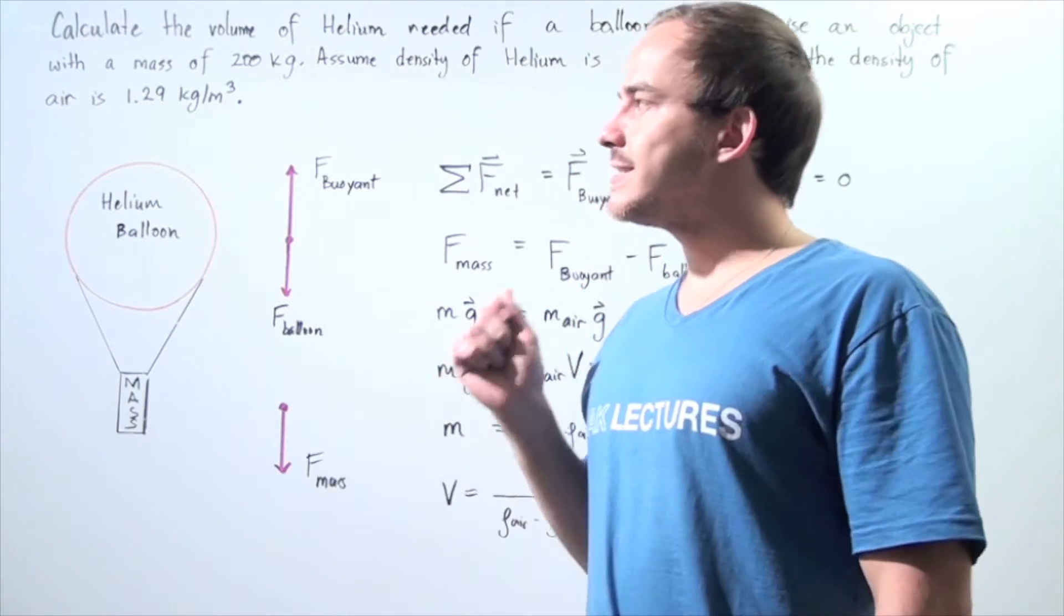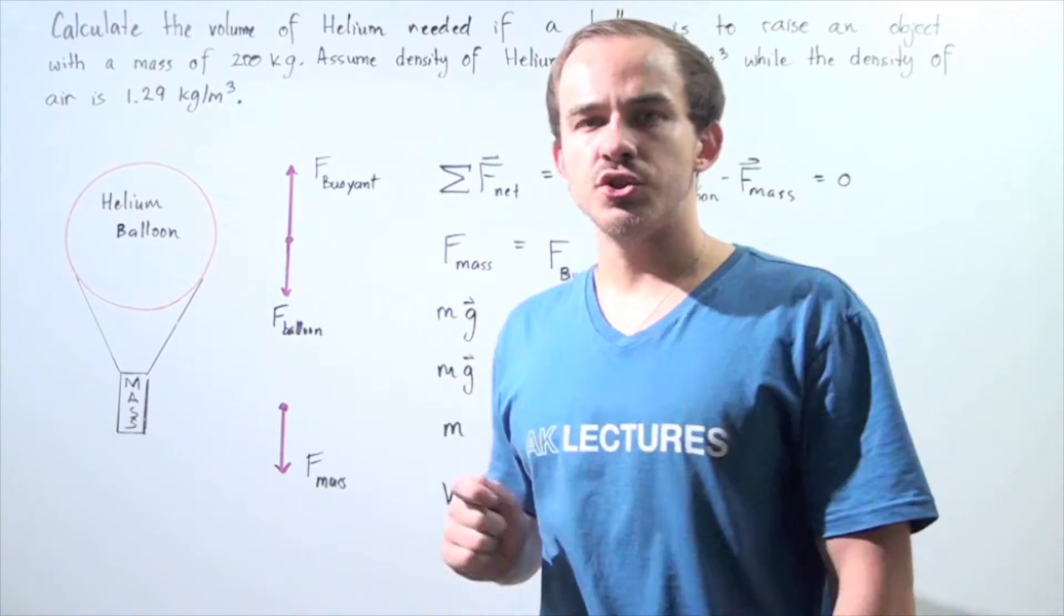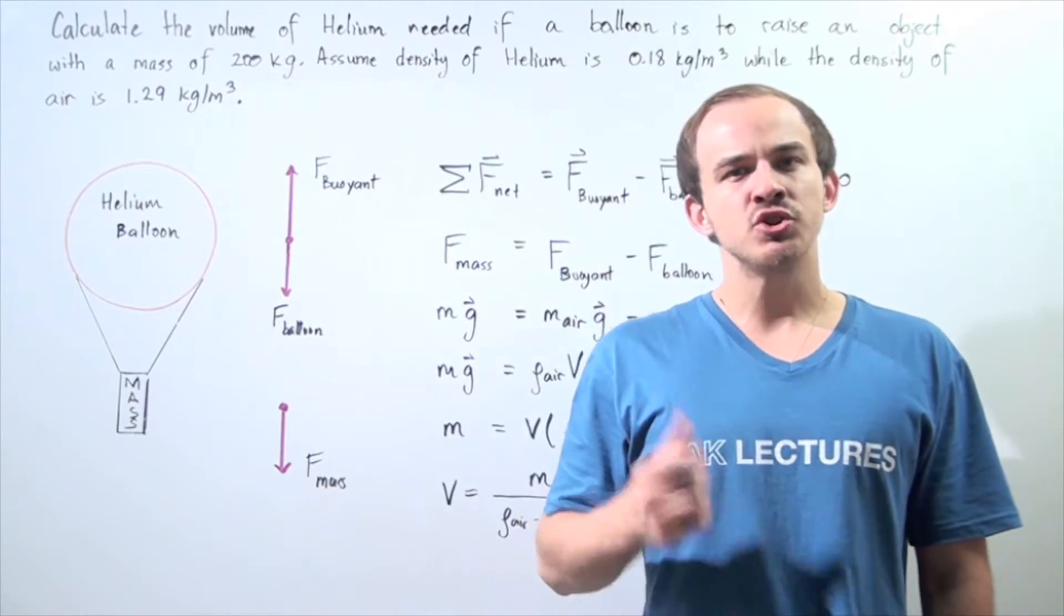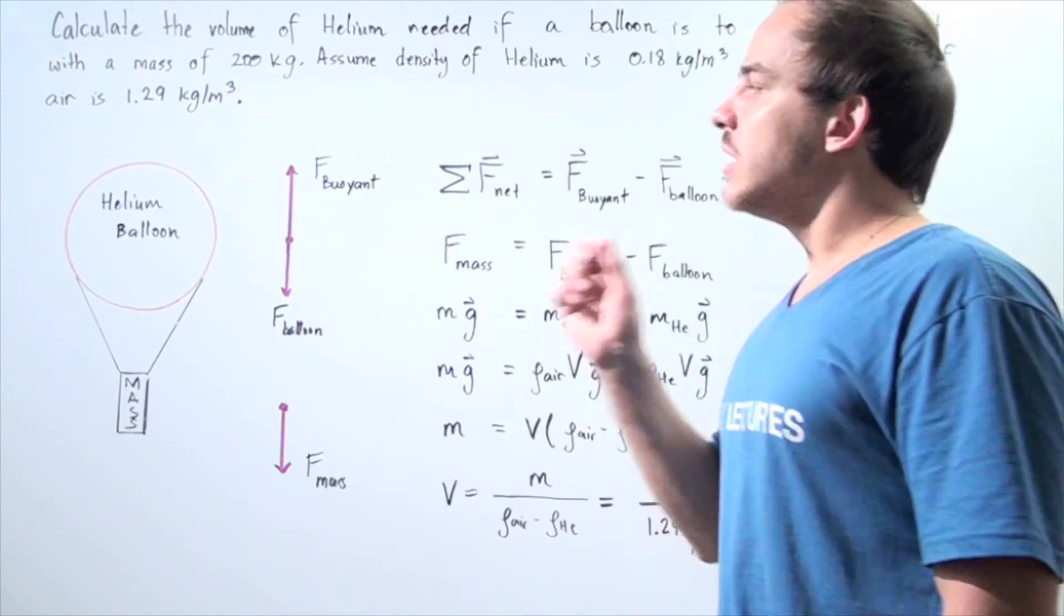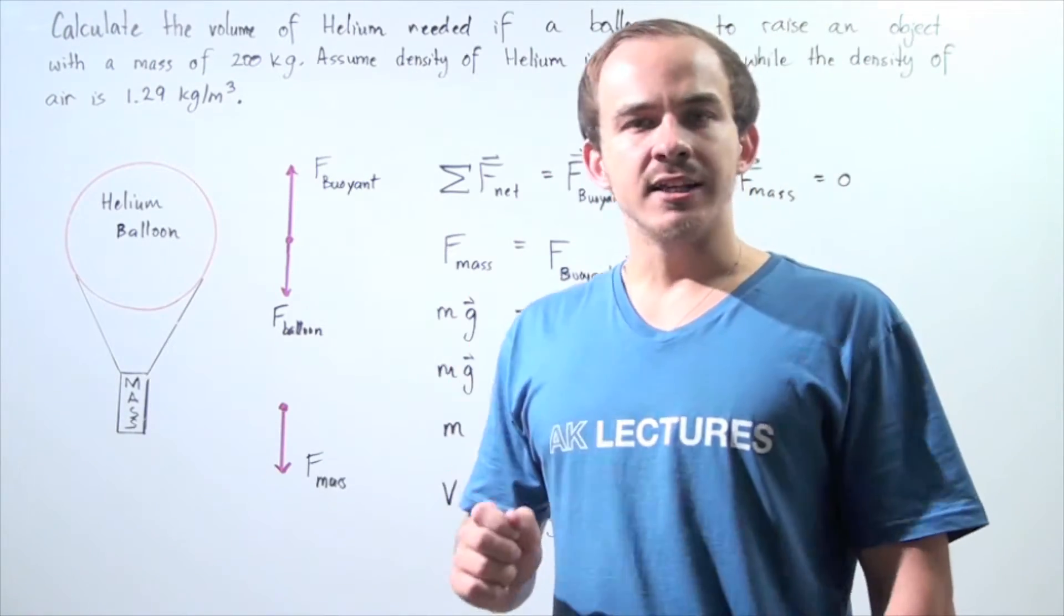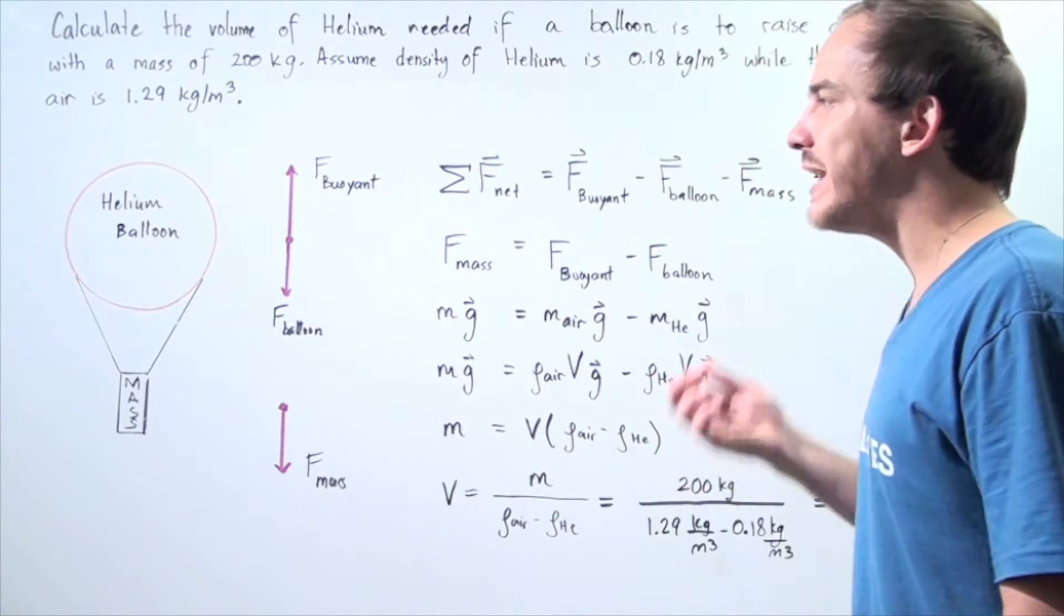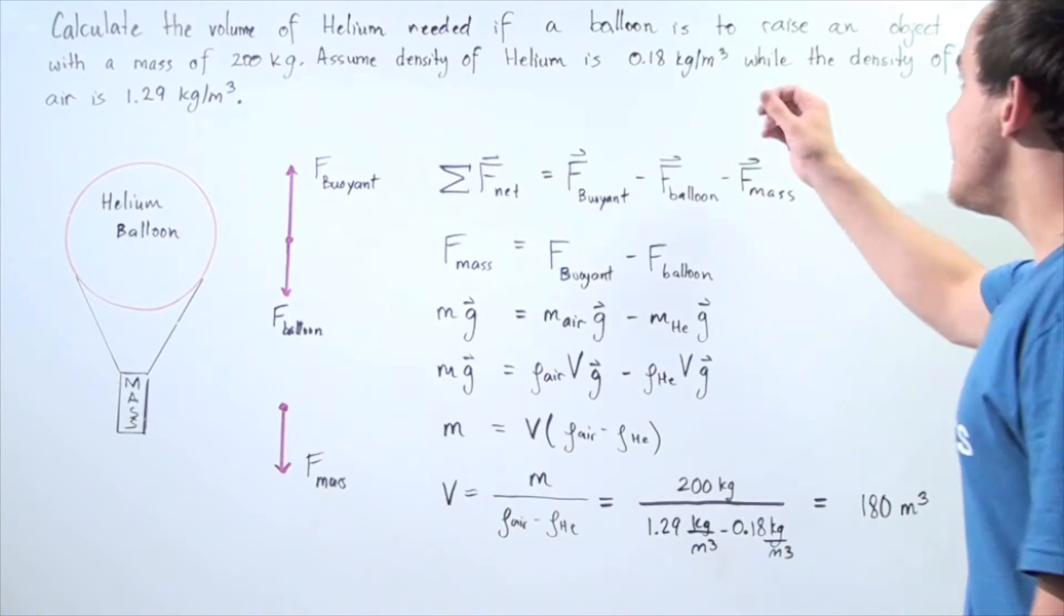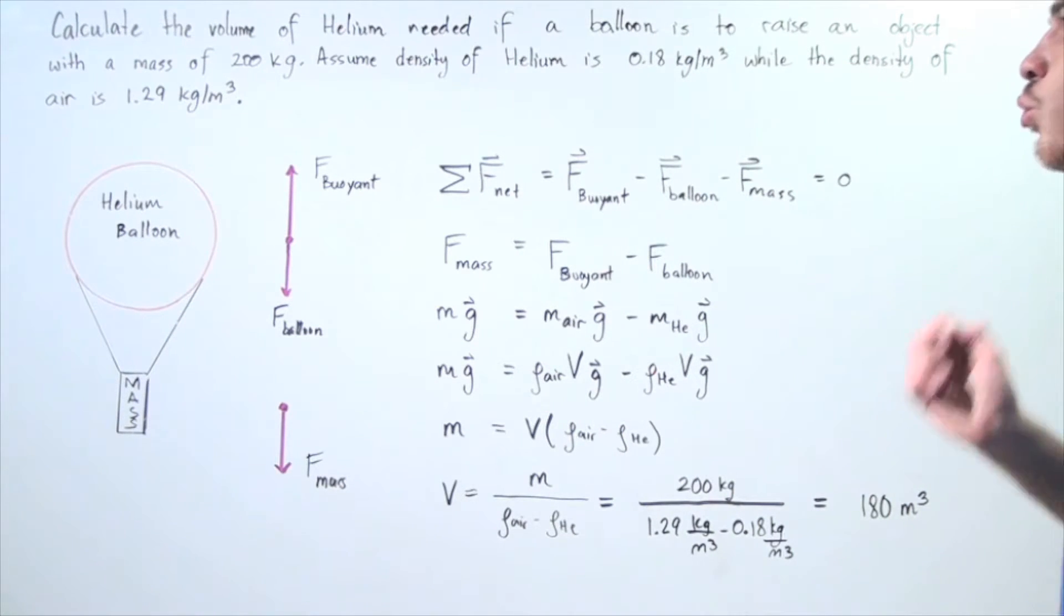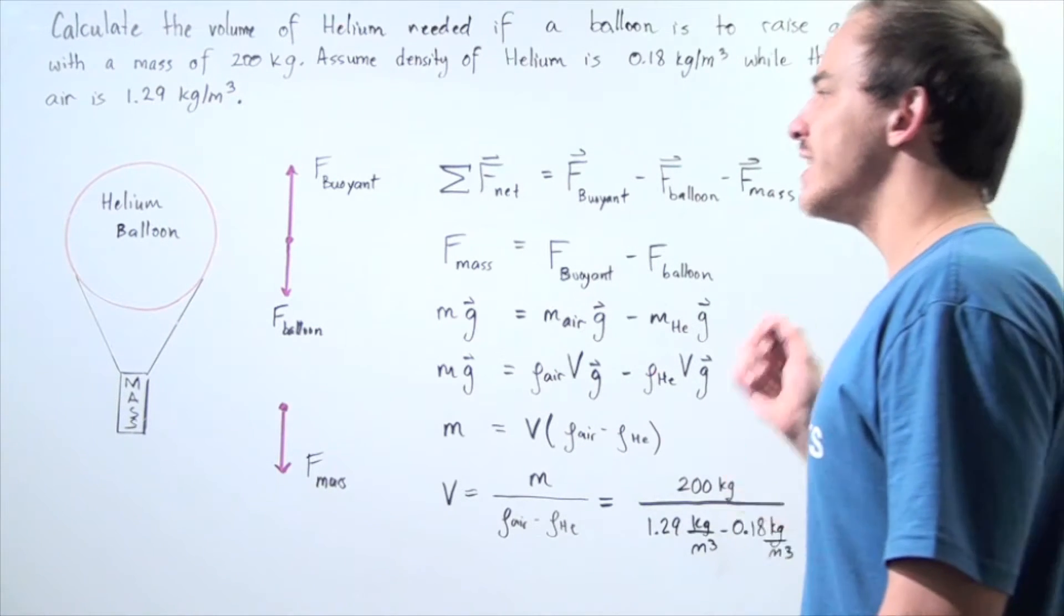So let's look at the following example in which we're going to use Archimedes' principle to help us solve it. Let's suppose we want to calculate the volume of helium needed if a balloon is to raise an object with a mass of 200 kilograms.